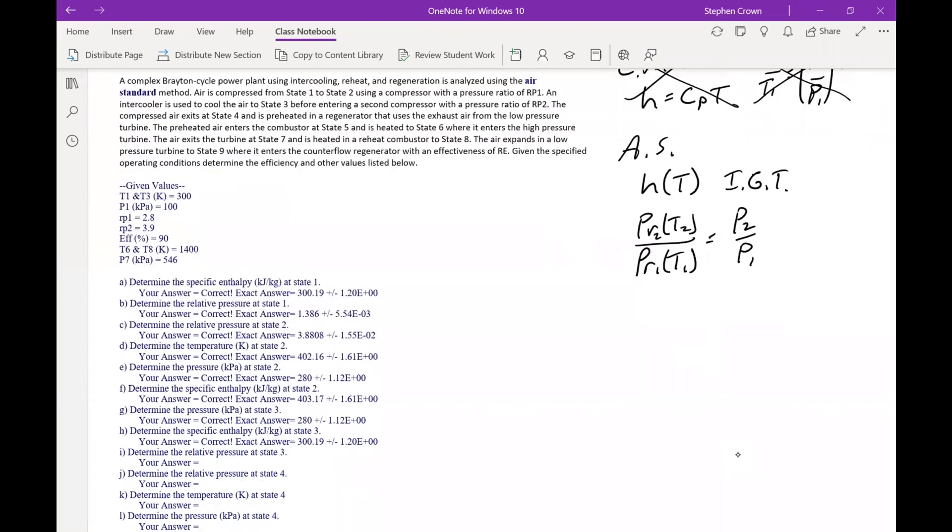So for H1, it's a function of T1, where T1 is given as 300K. So we go to the ideal gas tables, we go to 300K, and we find out that it equals 300.19. And so that came from the tables, ideal gas tables, Table A-22. Then we want to find the relative pressure, same thing. So PR1 is a function of T1, where T is given as 300K. So we just go over a few more columns, and we find out it's 1.386.